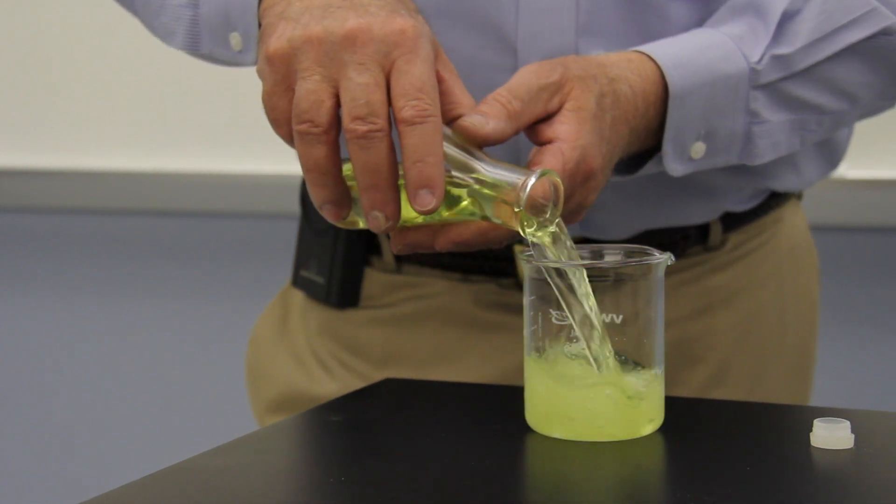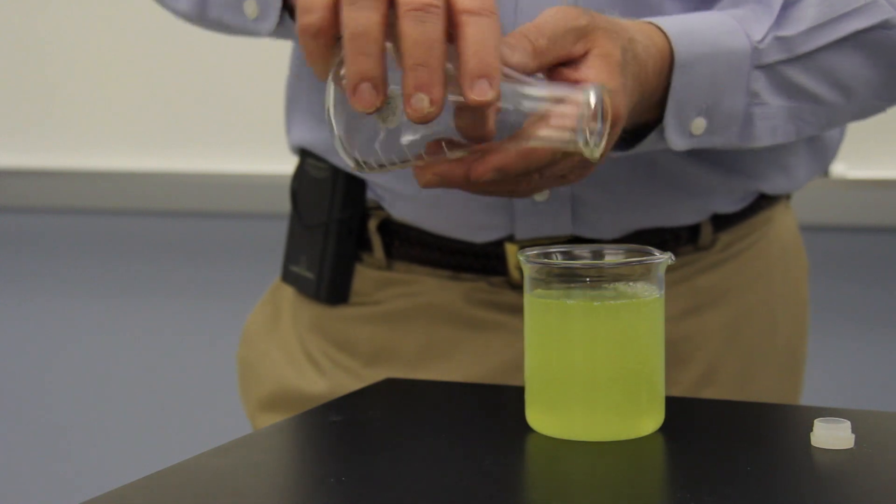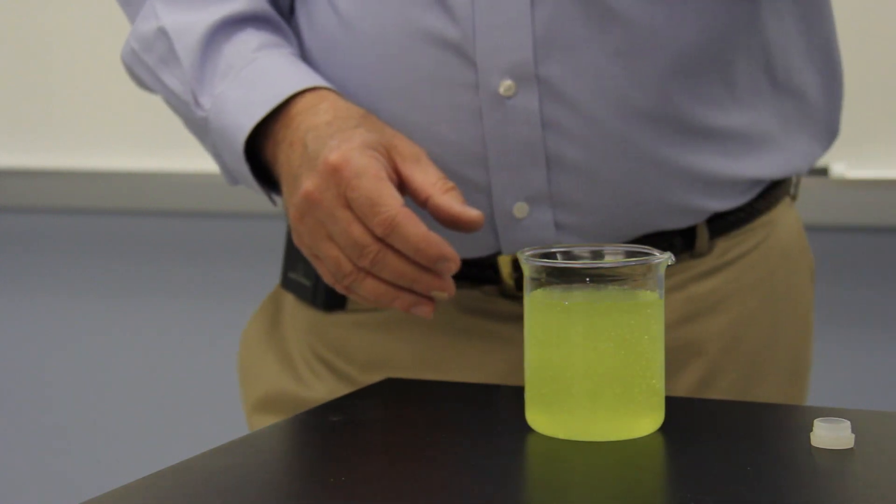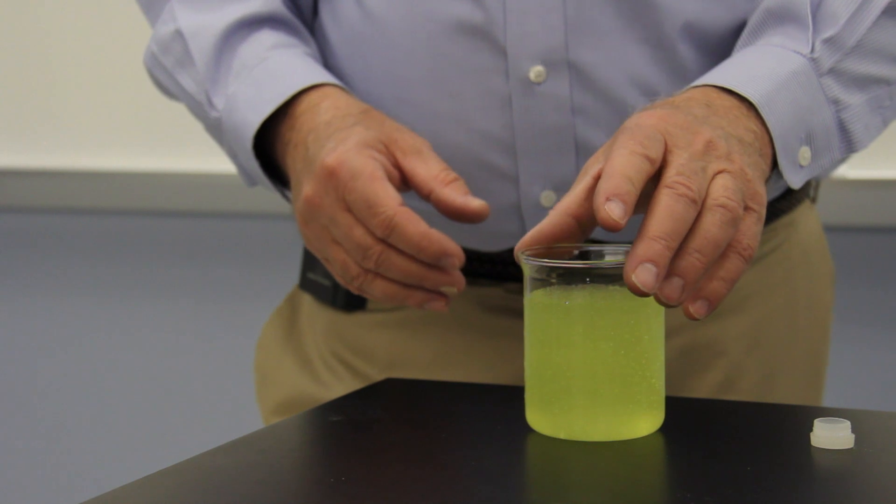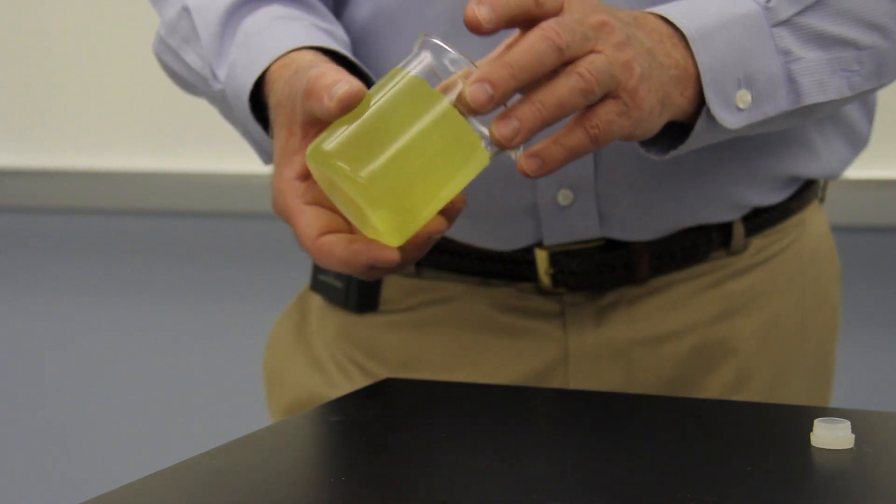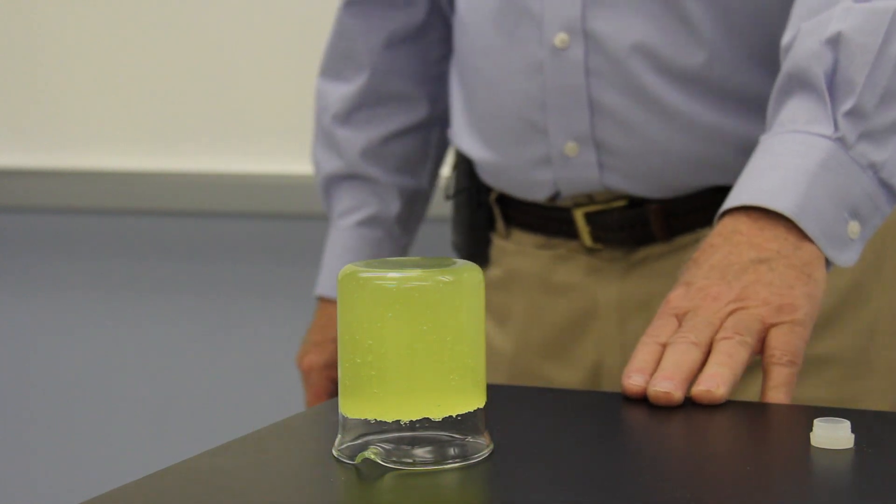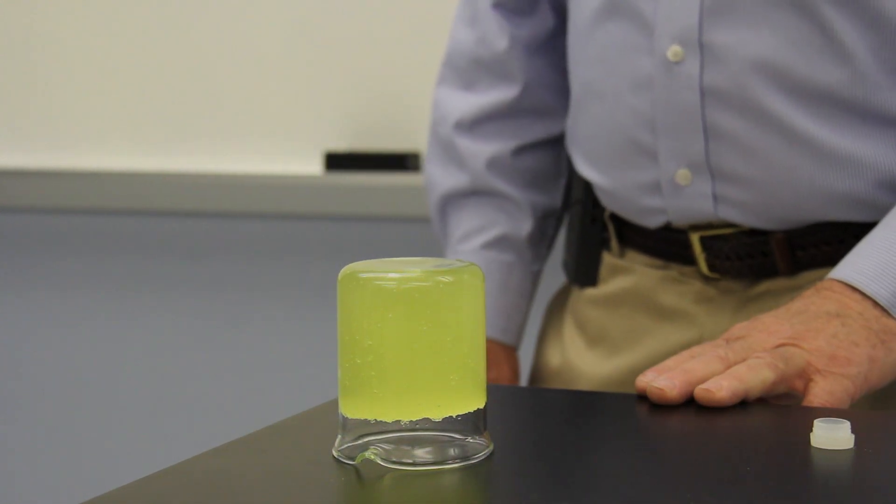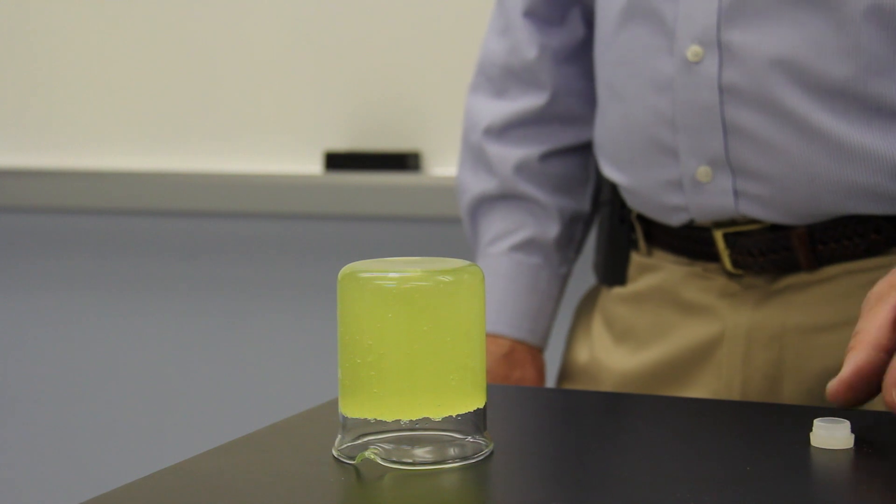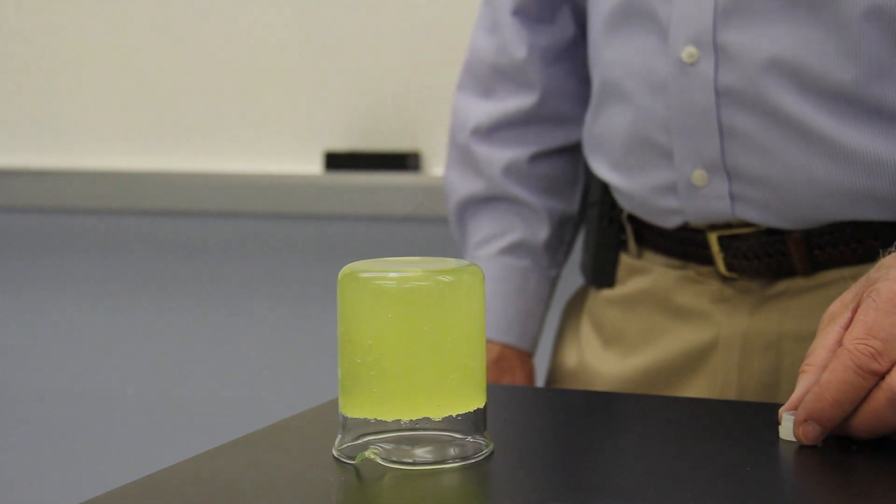But I'm going to dump the 200 milliliters of water. And we see that some changes are taking place. And notice how efficient our super slurper is. That one gram of sodium polyacrylate has absorbed 200 milliliters of water.